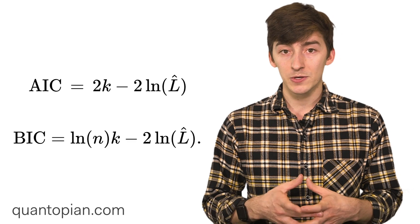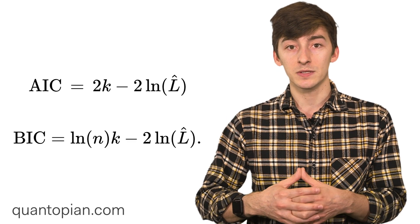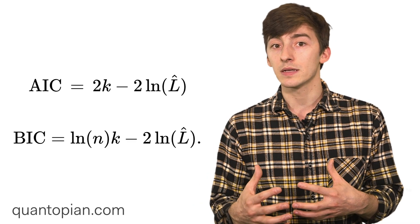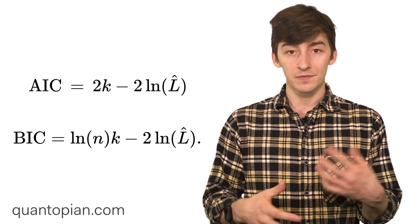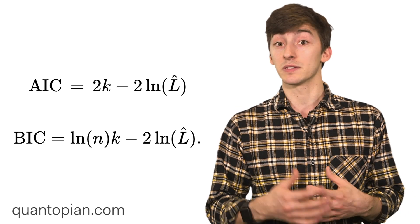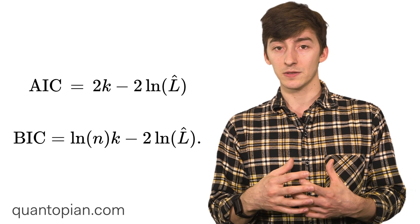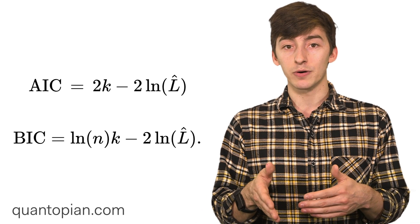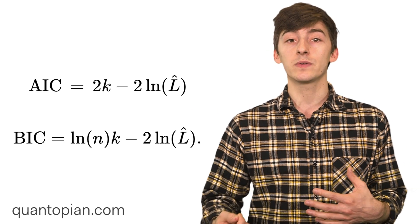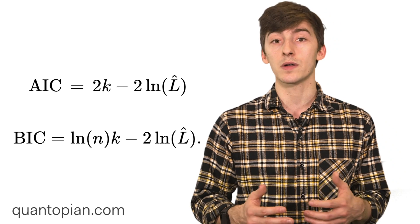To check whether you're using too many parameters or not, a common thing to do is to use AIC or BIC, information criteria that evaluate how much information is in a model. AIC and BIC can tell you whether adding a new parameter to your model actually increases the amount of information in it or not.